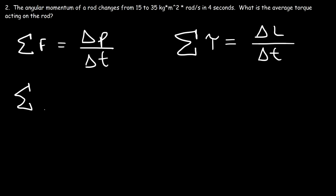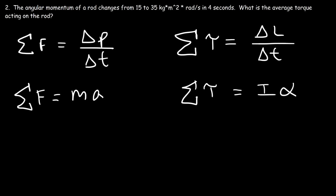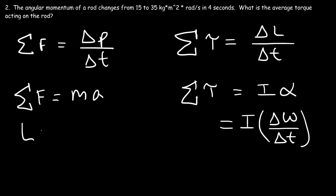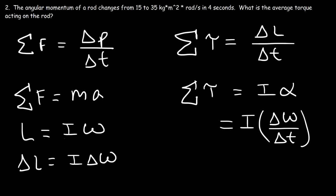Both equations come from Newton's second law. Net force on an object is mass times acceleration. For rotational motion, net torque is equal to the inertia of the object times angular acceleration. Angular acceleration is the change in angular velocity divided by the change in time. And momentum is inertia times omega. So the change in angular momentum is inertia times the change in angular velocity. Therefore, we can replace I times delta omega with delta L. So net torque equals the change in angular momentum divided by the change in time.